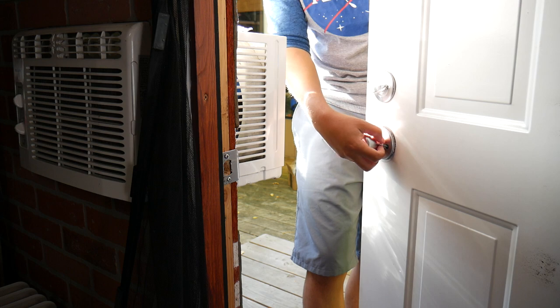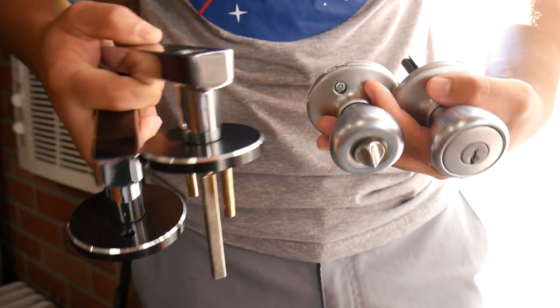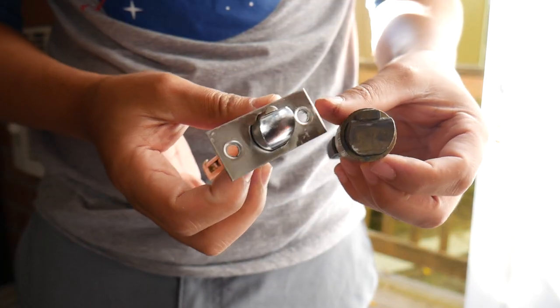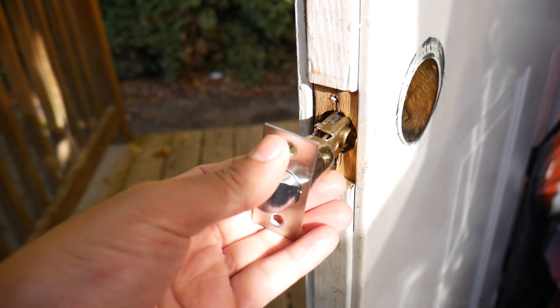So all you need to install is the screwdriver. Just unscrew your old doorknob and you can see what it looks like next to each other. And then you'll want to remove this piece and replace it with the new one and this is what it looks like. You're gonna slide the new one into place.